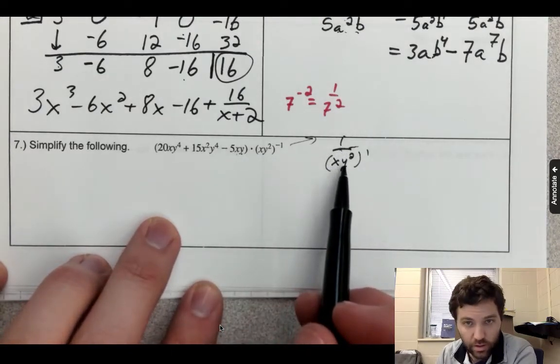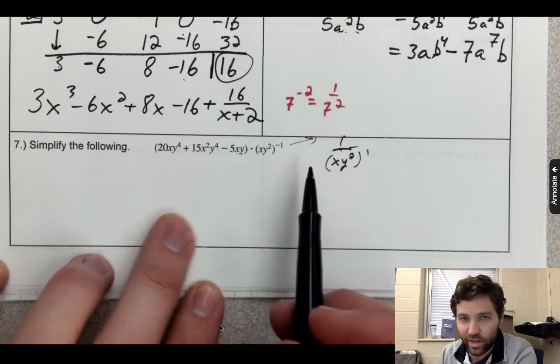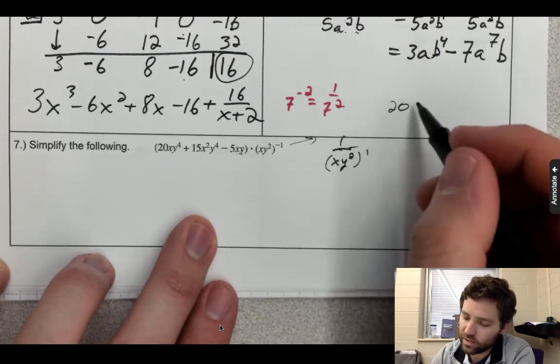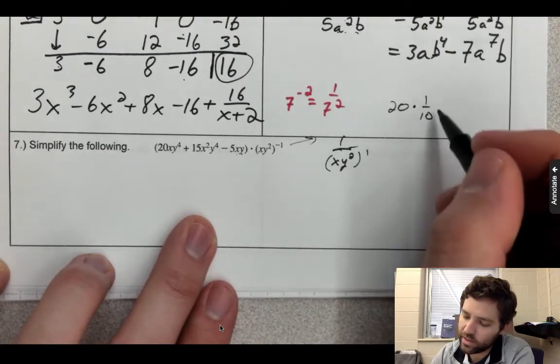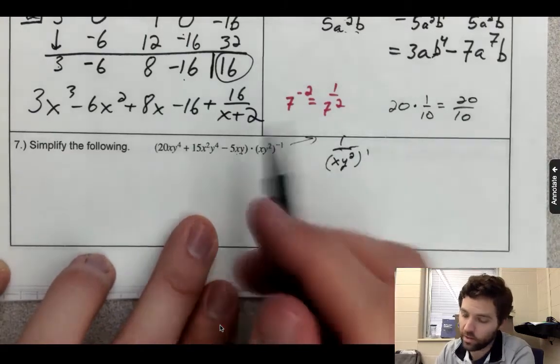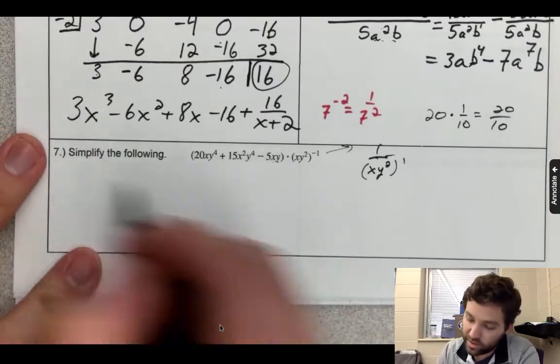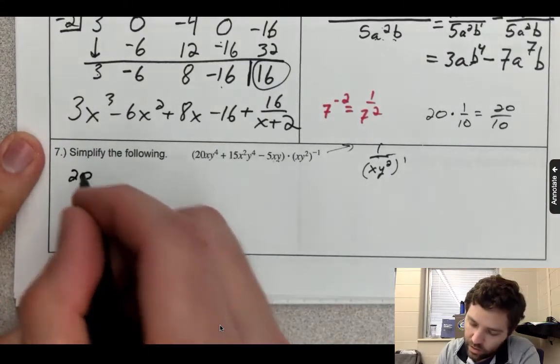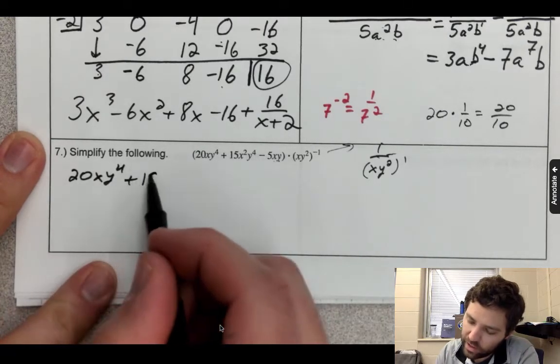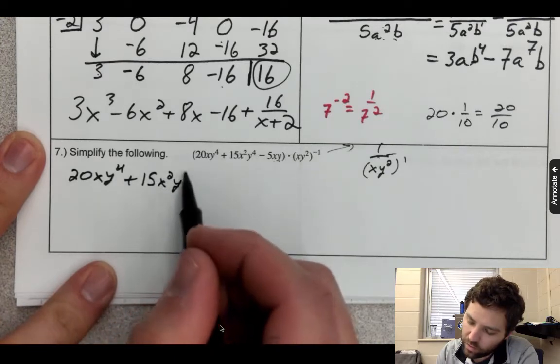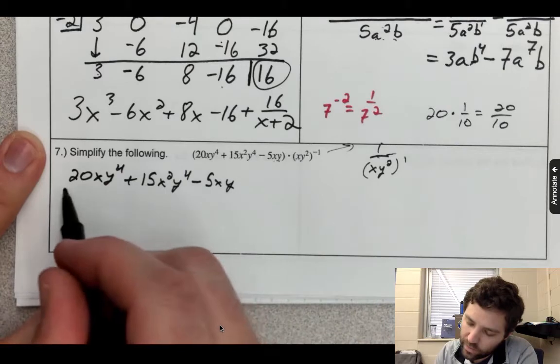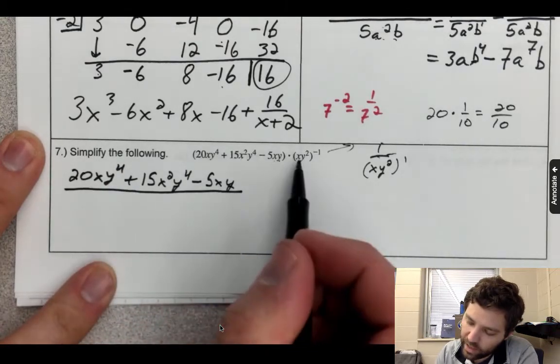You know, if I take 20 times 1 over 10, that's the same as 20 divided by 10. All right, so I'm going to set this up in this way: 20xy⁴ + 15x²y⁴ - 5xy, all divided by xy².